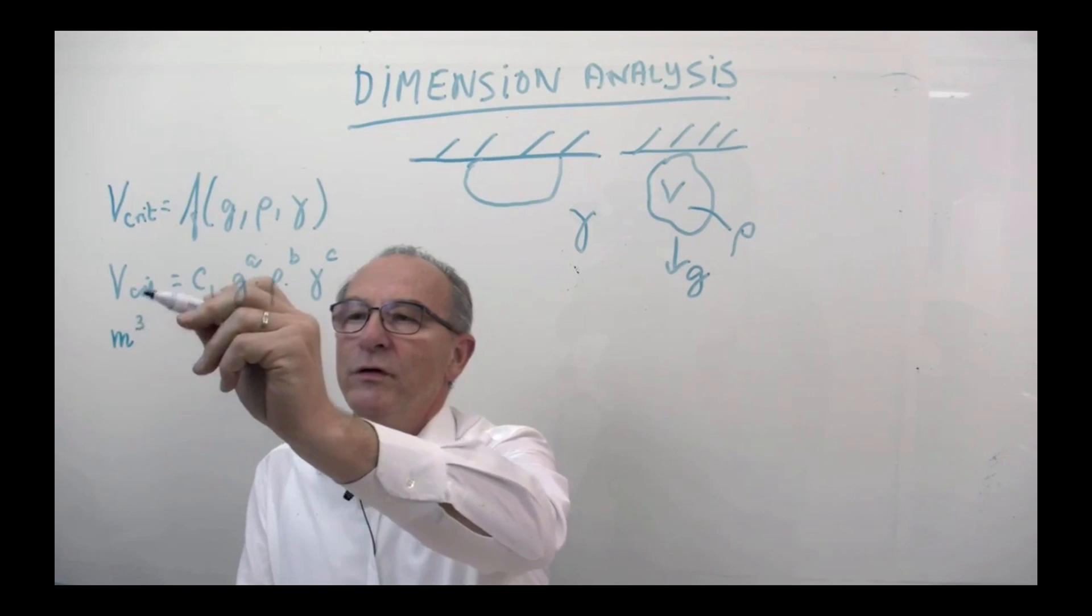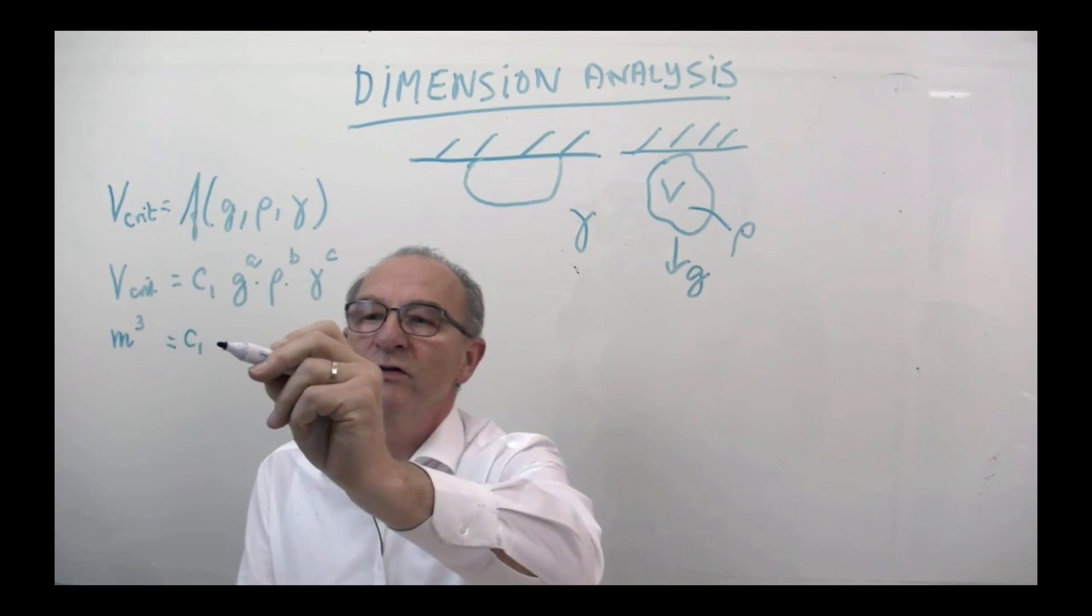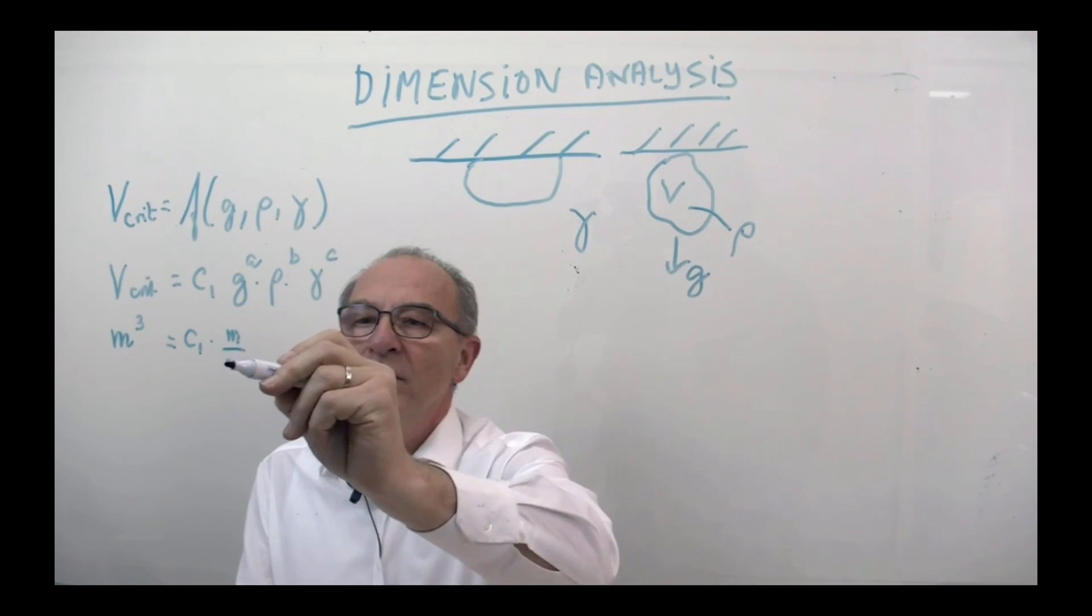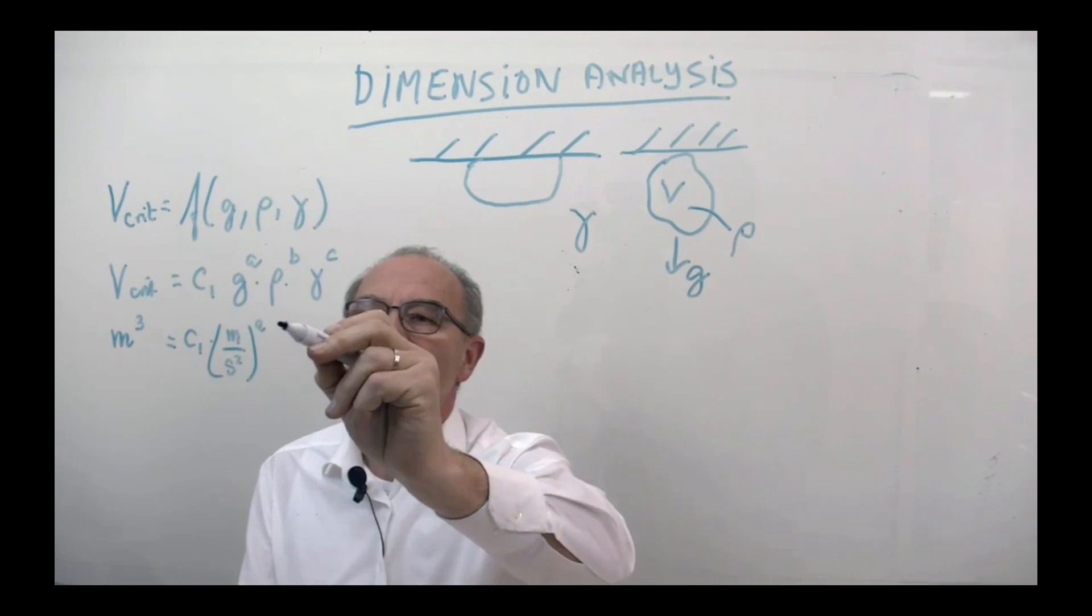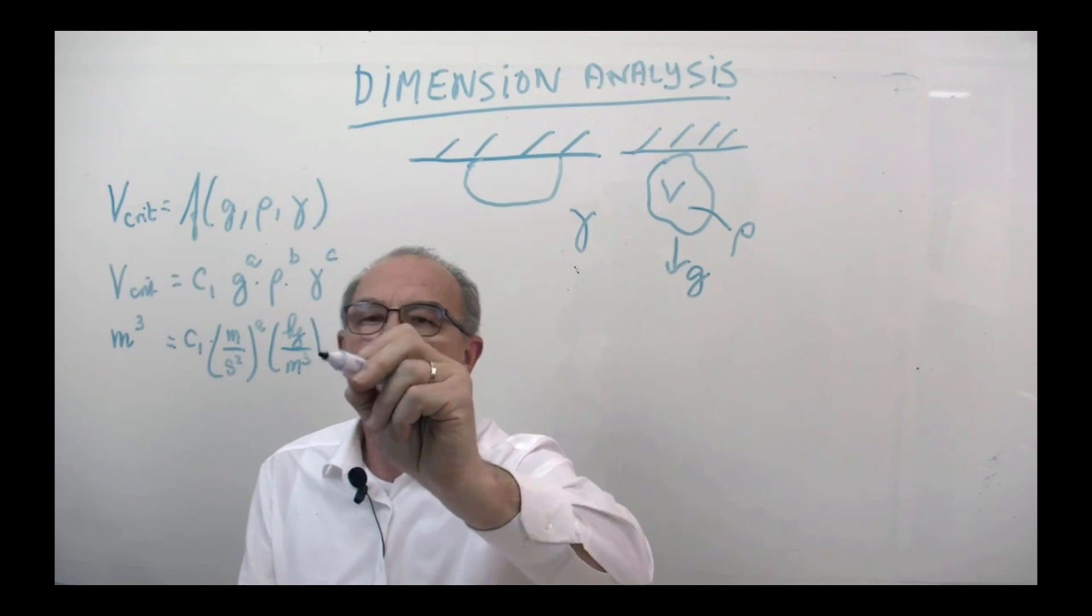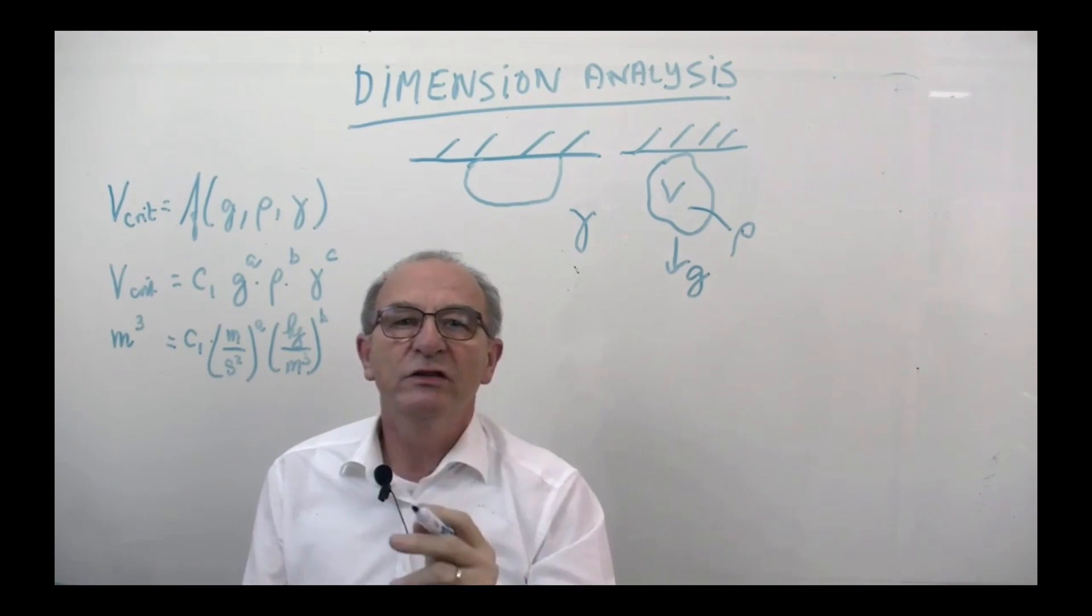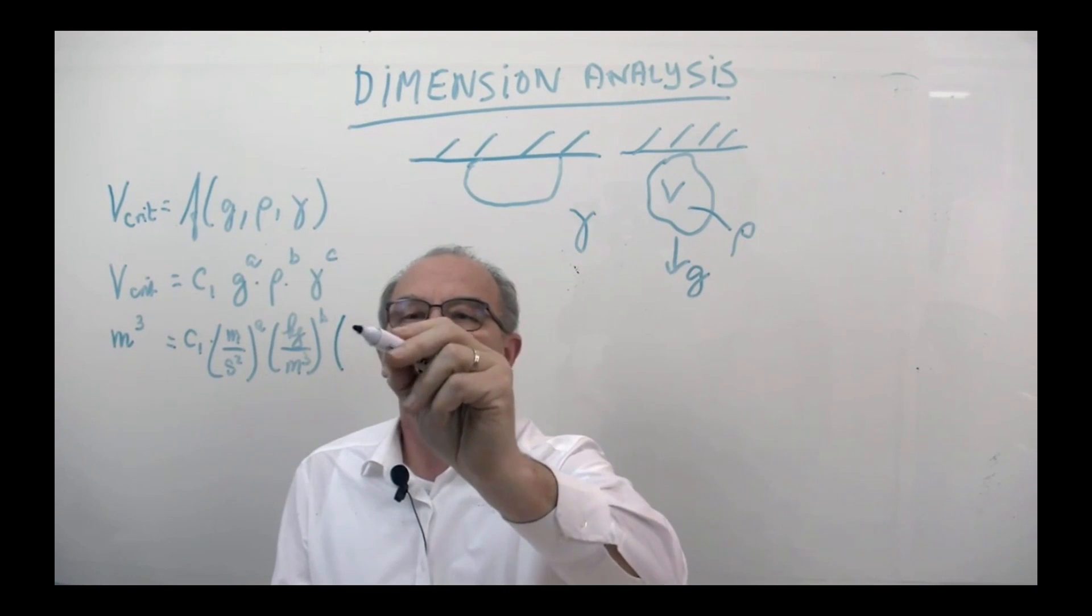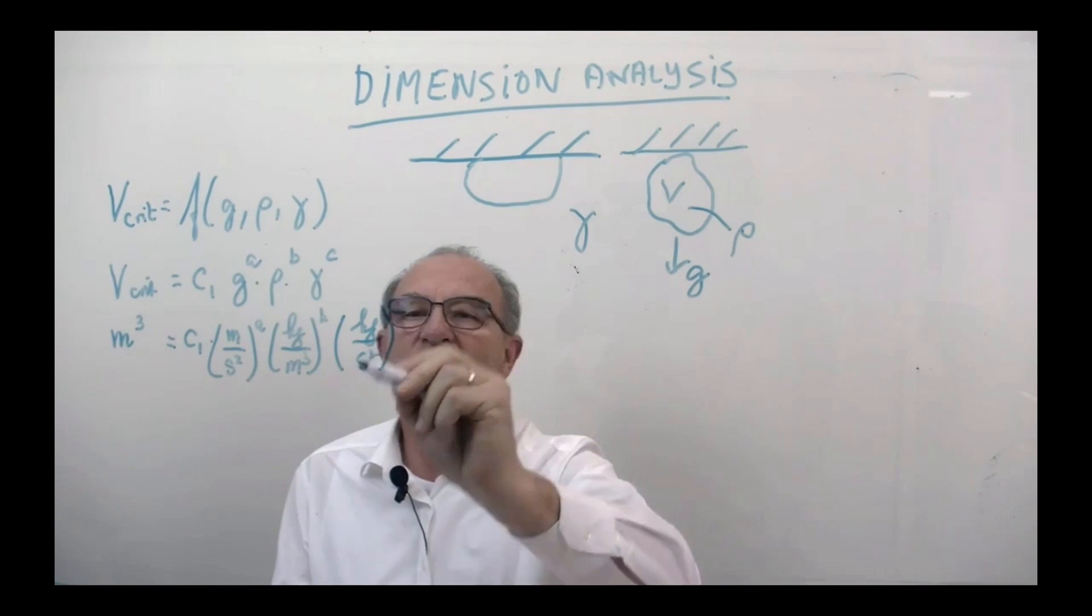So what we now write down is the SI units of each of these properties. The volume has the dimensions of cubic meters, a constant is dimensionless. This is meters per second squared to the power A, this is the density which is kilograms per cubic meter to the power B, and the surface tension is joules per square meter, but you can rewrite this in SI units to kilograms per second squared to the power C.